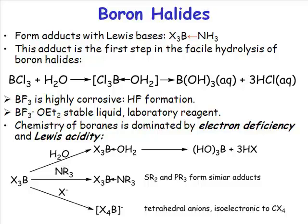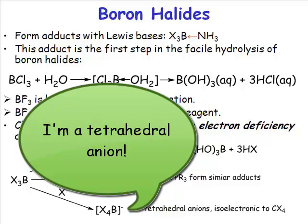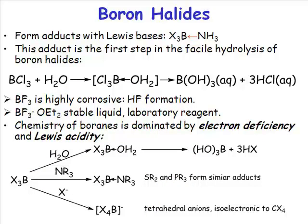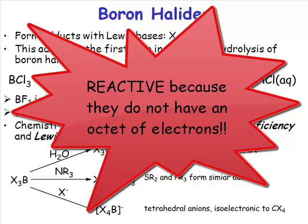That adduct would be the boron tetrachloride anion — or indeed boron tetraiodide or boron tetrafluoride. These are tetrahedral anions, and the valency around boron has the same number of electrons as carbon tetrachloride. So these boron tetrahalide anions are isoelectronic with CCl4 — they have an octet of electrons. This explains why the neutral boron trihalides are reactive: they do not have an octet of electrons.